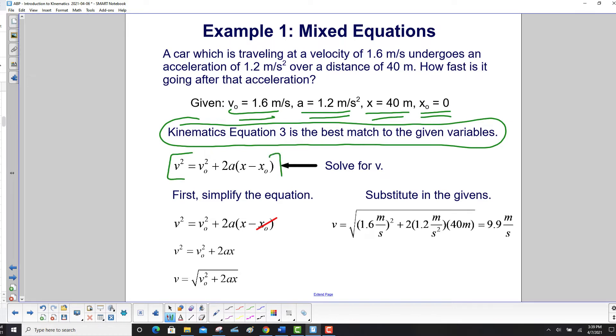So here's third kinematics. First, simplify the equation by zeroing out any terms, and that's x zero, that's equal to zero, so we right away get rid of that. We have v squared is your initial velocity squared plus 2ax. Take the square root of both sides to find your equation for your final velocity here.